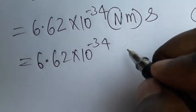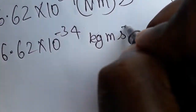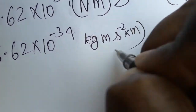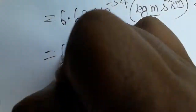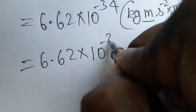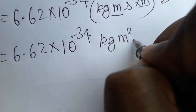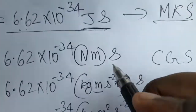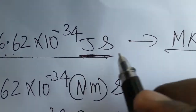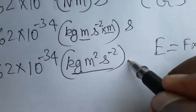Newton is force, which is mass into acceleration: kg·m·s⁻². So substituting, we get 6.62 into 10 power minus 34 kg·m²·s⁻², which fully corresponds to the joule in the MKS system — this is what we will convert to erg.